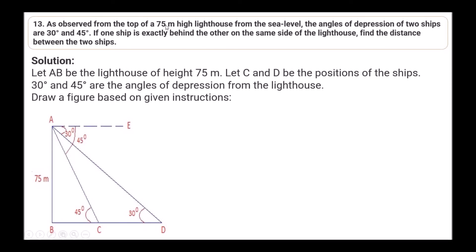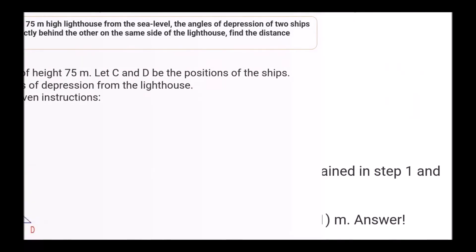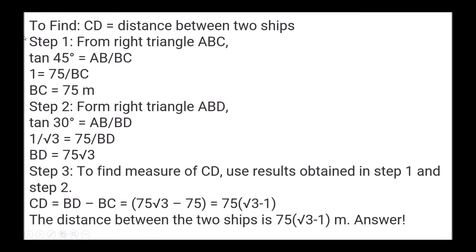Question 13: From the top of a 75-meter high lighthouse from sea level, the angles of depression of two ships are 30° and 45°. If one ship is exactly behind the other on the same side of the lighthouse, find the distance between the two ships. Let AB = 75 meters (lighthouse height). C and D are positions of the ships. In right triangle ABC: tan 45° = AB/BC, so 1 = 75/BC, giving BC = 75 meters.